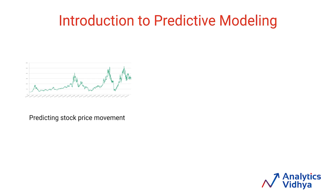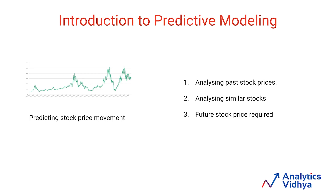Coming to our last option, a stock's future price is heavily influenced by past prices, as whether the price will go up or down depends on its past performance along with other factors. Similar stocks can also be analyzed to predict the movement of a particular stock. Since we need to predict the future movement of stock price based on past data, this is actually a predictive modeling task.